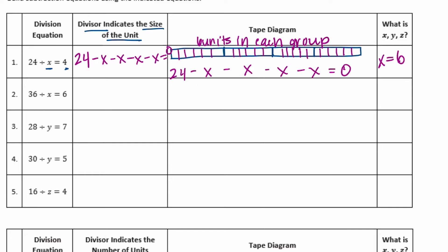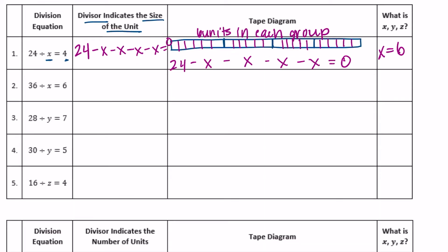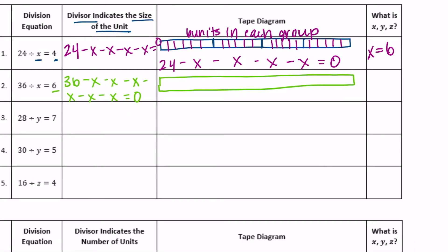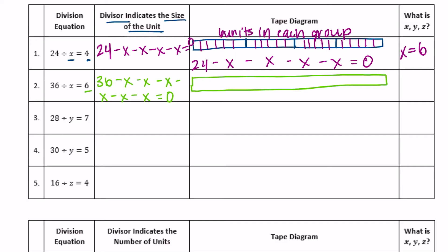Number two: 36 divided by X equals 6. I'll write the equation first. We have 36 and there are six groups, so I'm going to subtract six X's, and it should equal zero. Then I'll draw my six groups, and 36 divided by 6 gives six in each group.